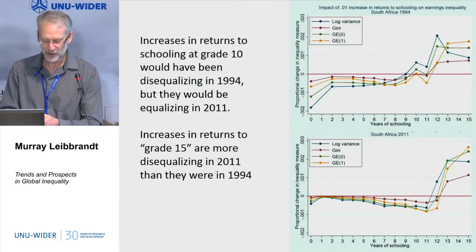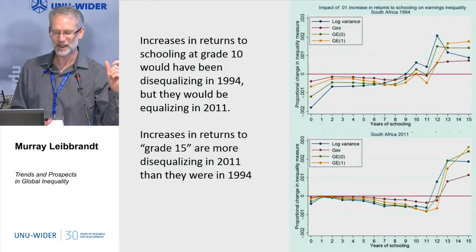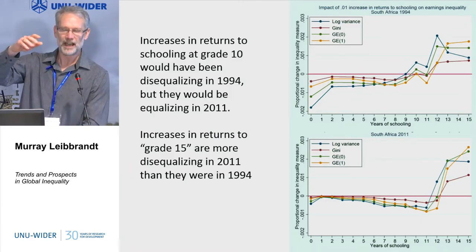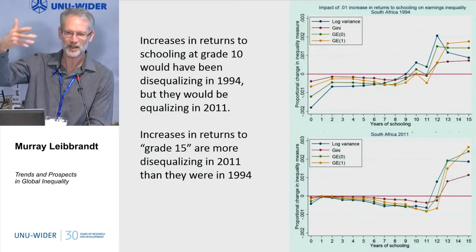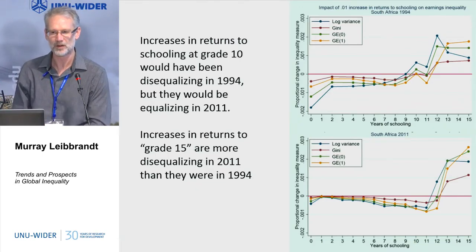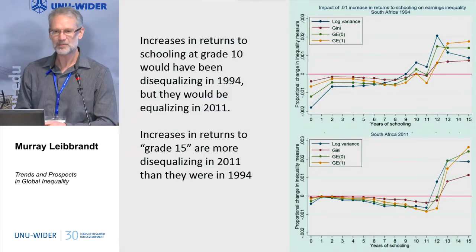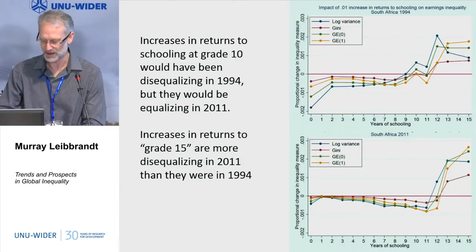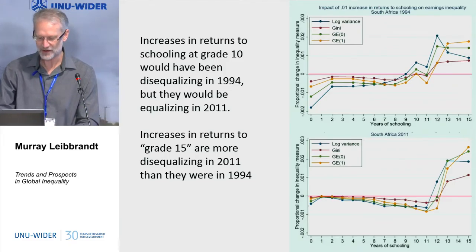We've done enough work on the South African education system to show that returns to everything below complete secondary have collapsed — very much like a skills twist in the US labor market — but from complete secondary upward, returns have been pretty constant, and above that have risen dramatically. That has driven inequality in earnings and employment in the South African labor market. But we need to do more to formally link that into understanding changes in the earnings distribution.